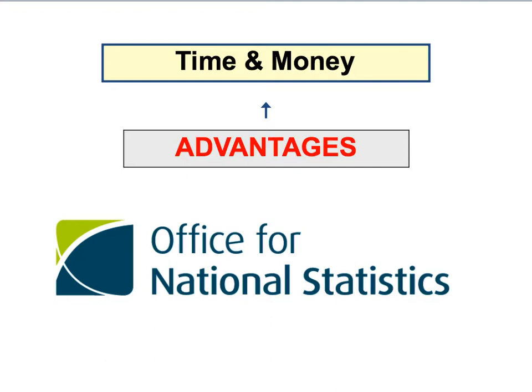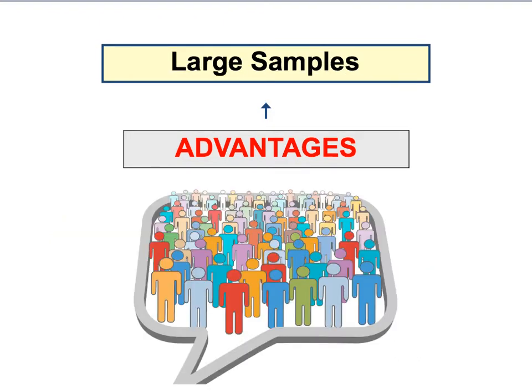The first obvious advantage of using official statistics is they are readily available via websites such as the Office for National Statistics, which means they can save the sociologist a lot of time and money. Secondly, the government surveys used to produce official statistics are usually very well planned with detailed self-completion questionnaires or structured interviews and large representative samples, making sociological research much more representative.